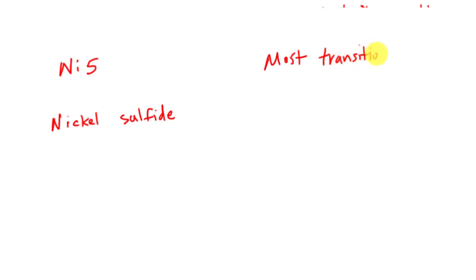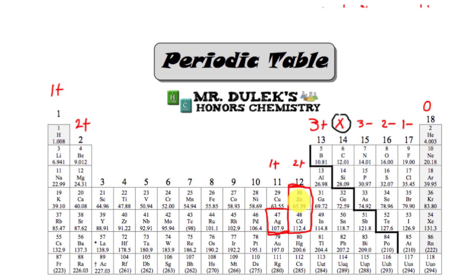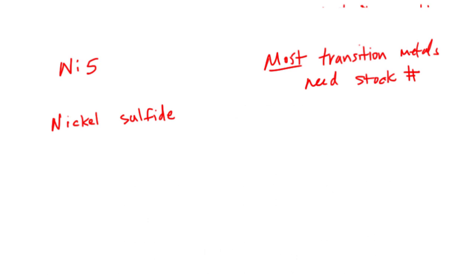A little rule of thumb is that most transition metals need a stock number. Most transition elements or metals need stock numbers. And I'm saying most because there are some that don't. The ones that don't need a stock number are the ones that you've got listed down here at the bottom. Zinc, cadmium, and silver. No stock number for these three here. They do not use a stock number. But any other element that you use in here would require a stock number. So that's how you know.